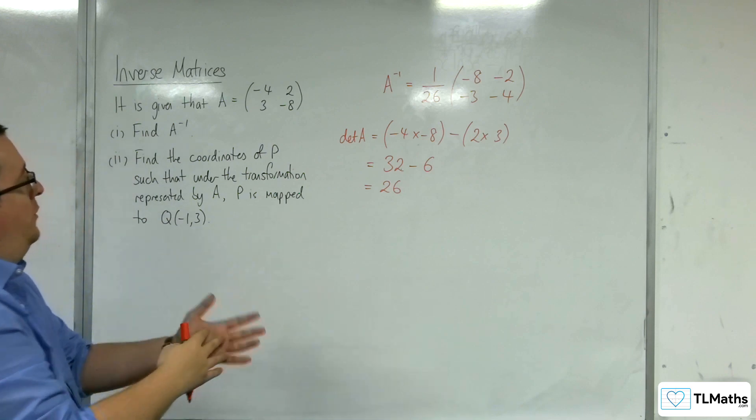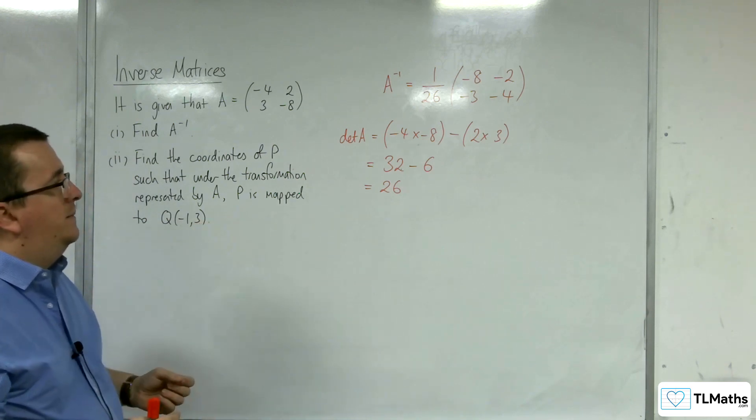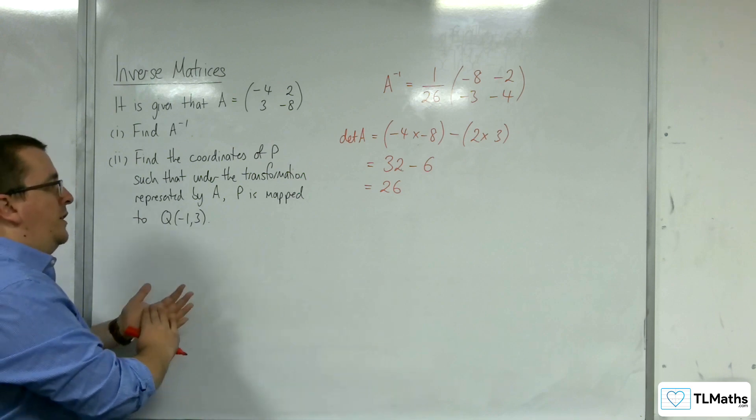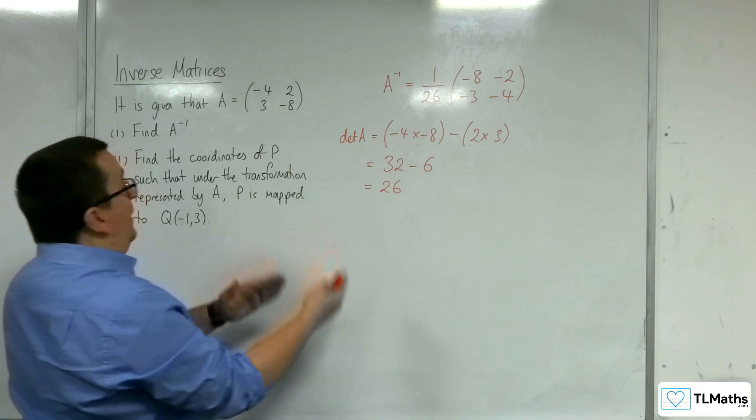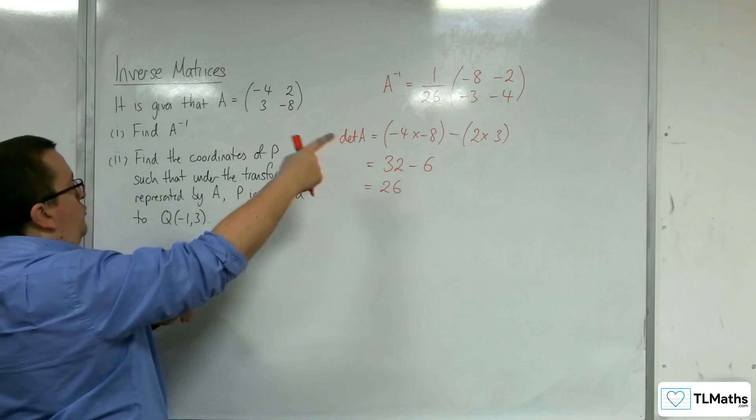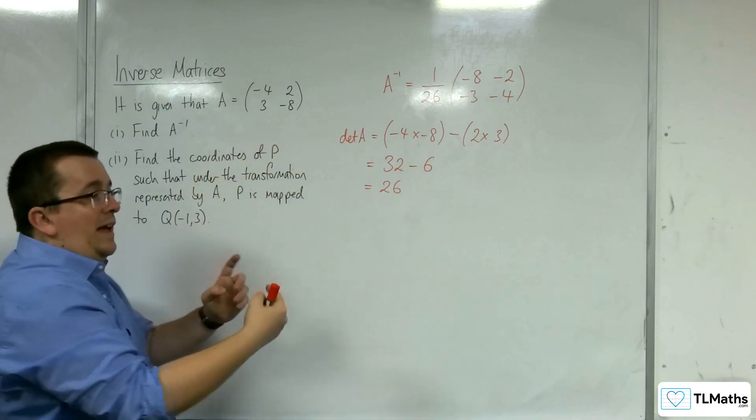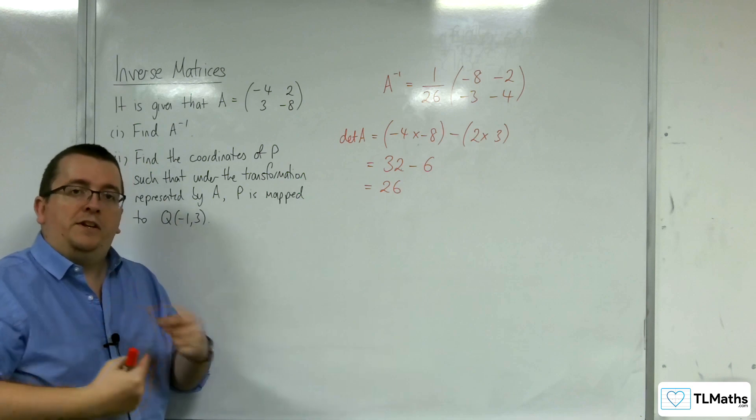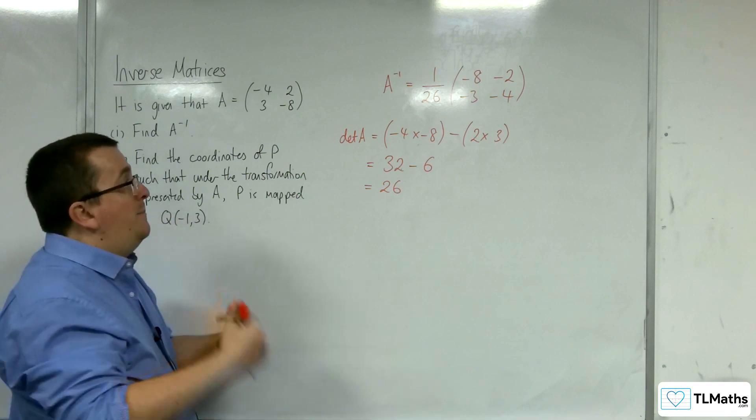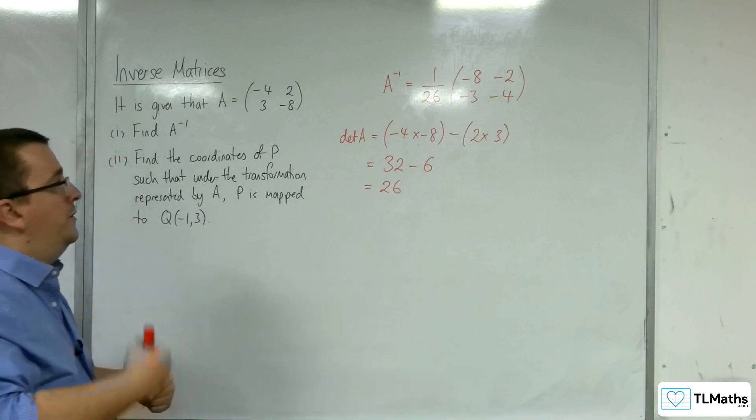Because I don't know what the coordinates of P are, what I can do is apply the inverse matrix to Q, because that should, as it says on the tin, invert the process. So, I should get back to where I started. I should get the coordinates of P.